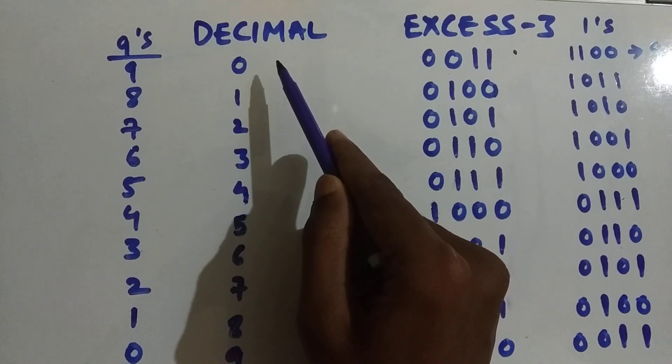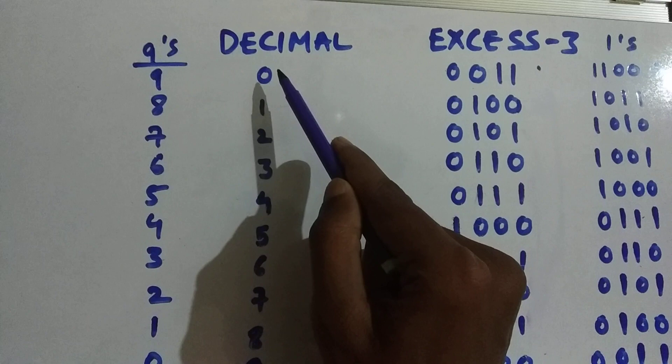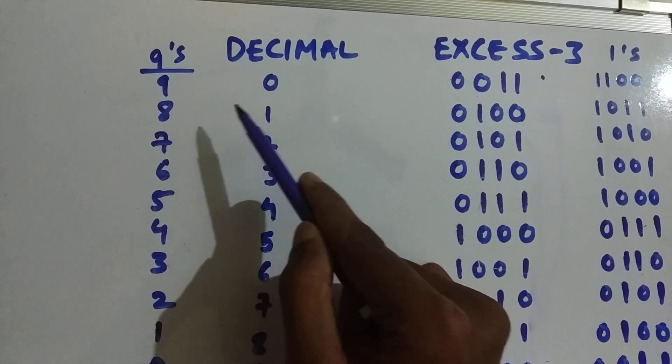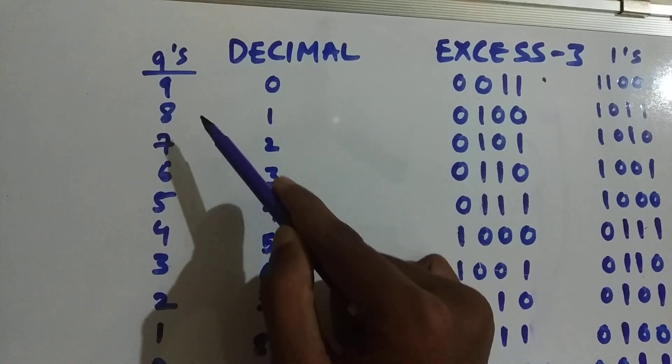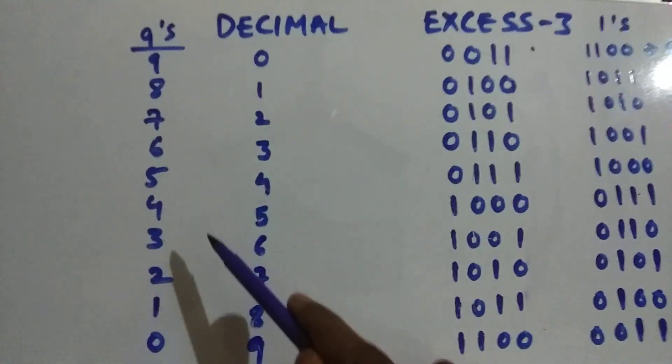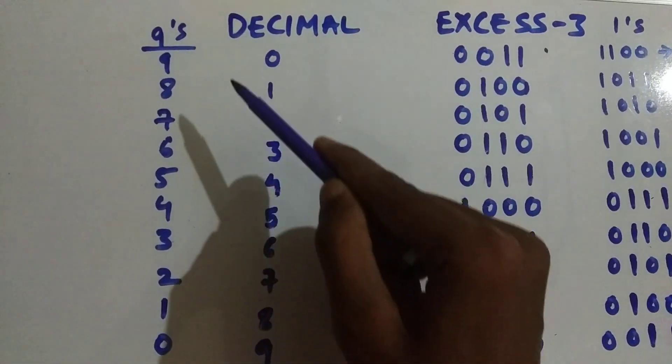first we need to take the 9's complement. So 9's complement of this number: 9 minus 0 is 9, 9 minus 1 is 8, 9 minus 2 is 7, 9 minus 3 is 6, and so on. 9 minus 9 is 0. These are 9's complements.